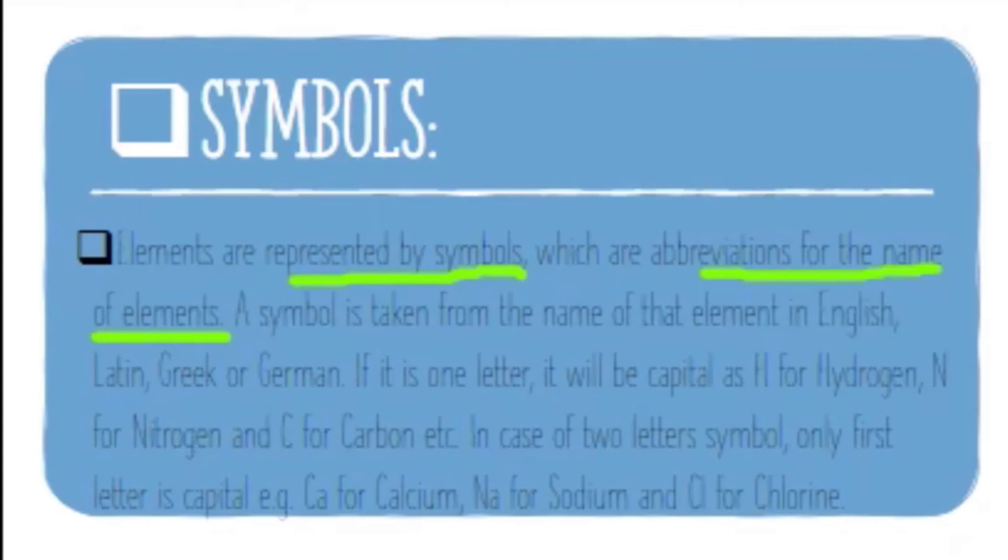We have two rules to write symbols. First rule: A symbol is taken from the name of that element in English, Latin, Greek, or German. If it is one letter, and the name of the element is only one word, it will be capital. For example, H for hydrogen—we use single H which is capital. N for nitrogen is capital. C for carbon is one word, so we write capital C.